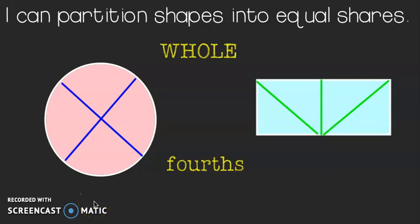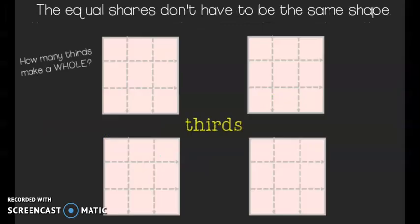And I want to share one more important thing with you. Something that's really important, too, is the equal shares don't have to be the same shape. They need to be the same size, yes, but not necessarily the same shape in order to be equal. First, I'm going to show you some examples where they are the same shape and then some where they are not.